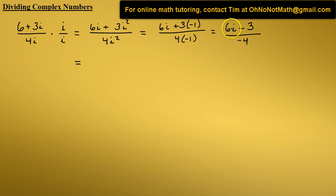Let's rearrange this numerator so that we have the real part before the imaginary part, which is the way it's normally done. So instead of 6i minus 3, we have negative 3 plus 6i, all over negative 4.